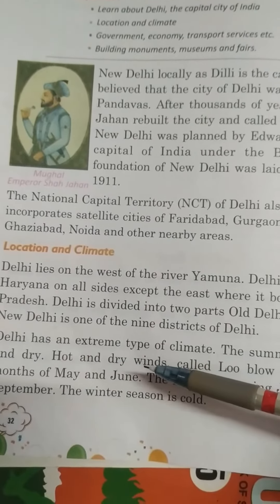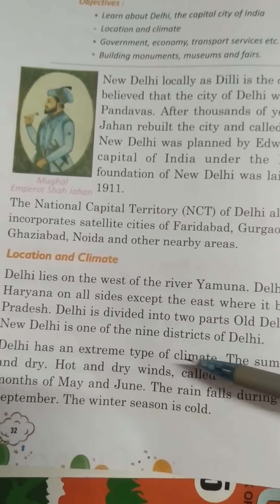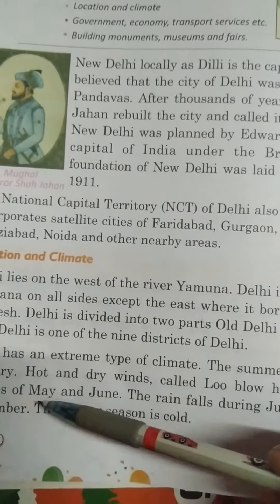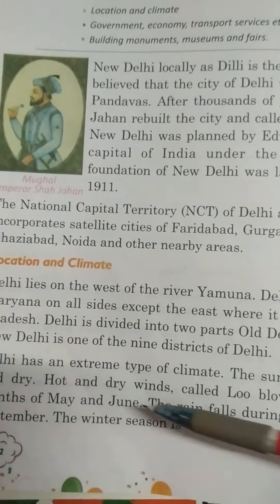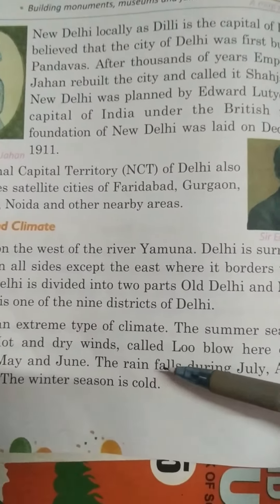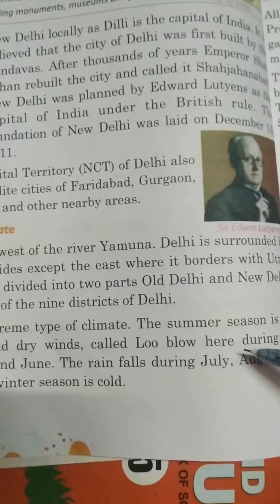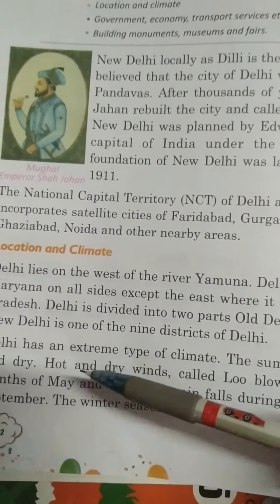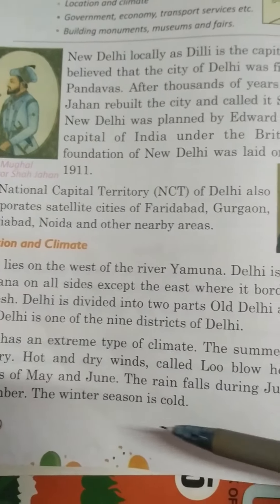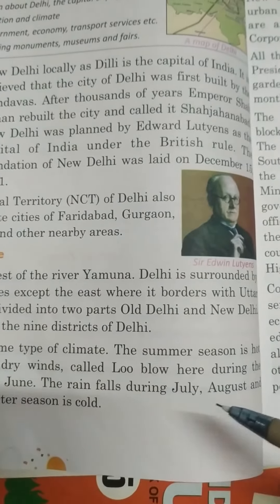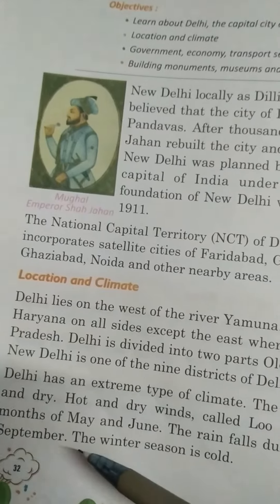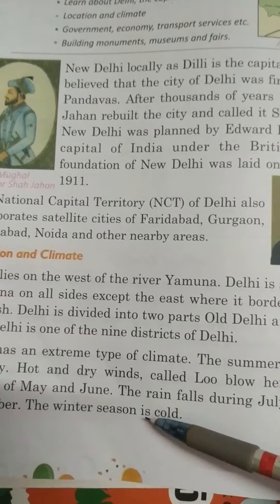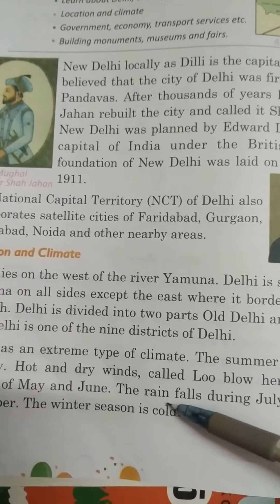Delhi has an extreme type of climate. The summer season is hot and dry winds called loo blow here during the months of May and June. The rain falls during July, August and September. The winter season is cold.